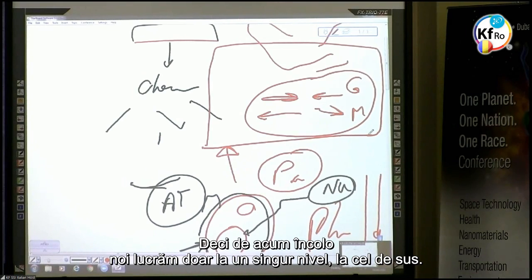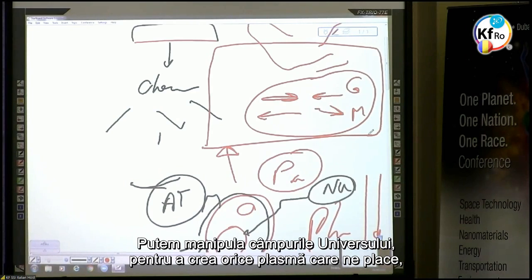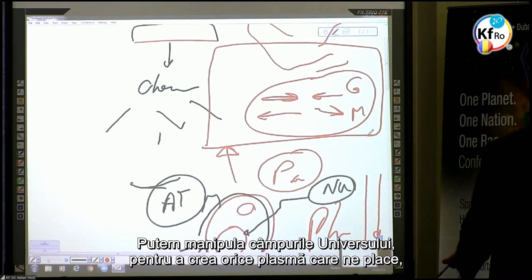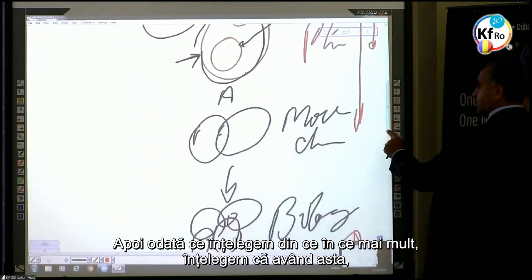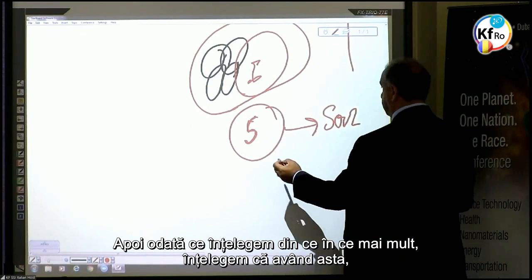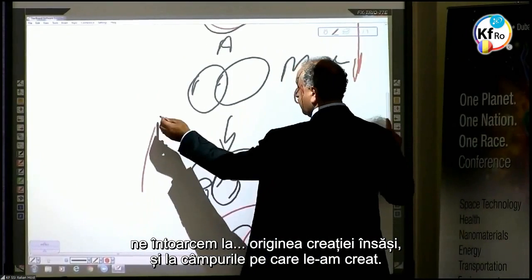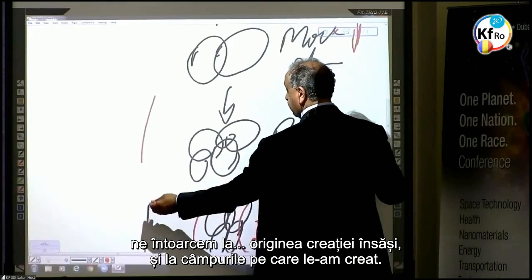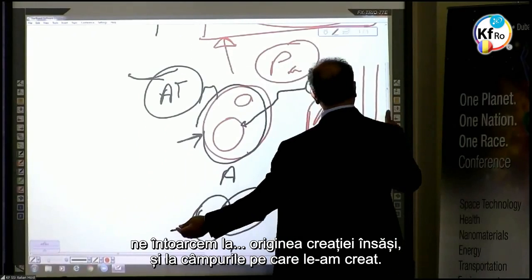From now on, we work in one level, on the top. Because now we can manipulate the plasma. We can manipulate the fields of the universe to create any plasma which we like, which with it we can produce any matter we like. As we understand more and more, in having this, you go back to the origin of the creation itself.